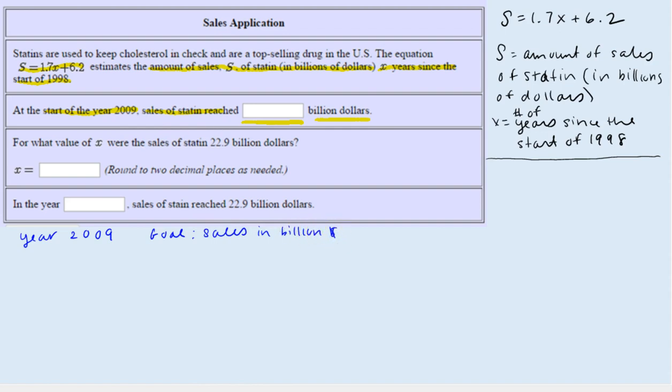So let's look at our formula. We have S equals 1.7X plus 6.2. The year 2009 is not directly our input. We don't want to put 2009 in here, because remember, X represents the year since the start of 1998. So our X is going to be the difference between 2009 and 1998.